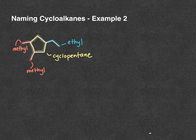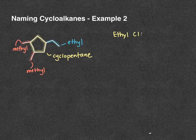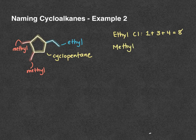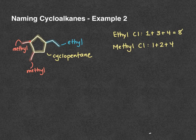When we look at the numbering, if we start with ethyl at carbon one, our sum would be location one plus three plus four, so our sum is eight. If instead we make a methyl carbon one, our sum is going to be one plus two plus four, which adds to seven. So the sum dictates that one of our methyls is going to be carbon one.